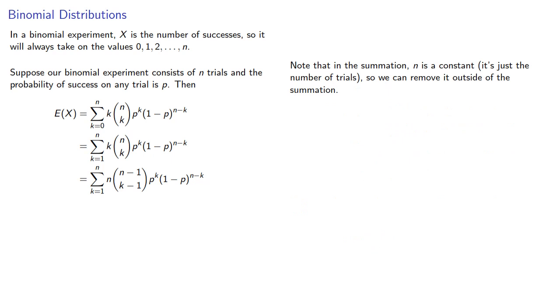Now, note that in the summation, n is a constant. It's actually the number of trials. So we can remove it outside of our summation. And for reasons that will become apparent soon, we'll also remove a factor of p. Because again, p itself is also a constant. So we can remove a factor of np.